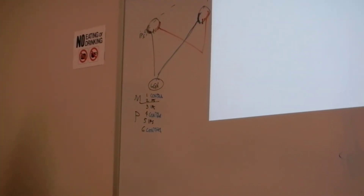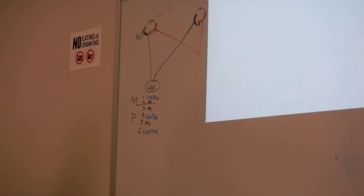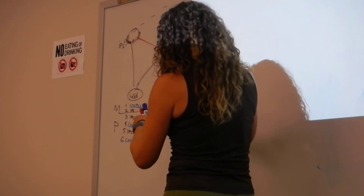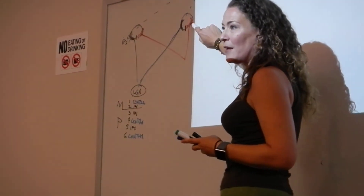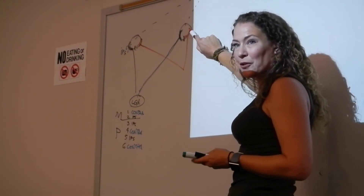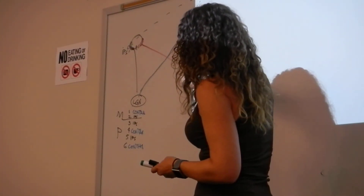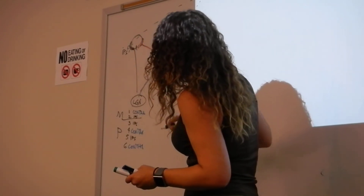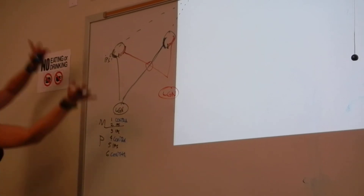Is this the exact same thing happening on the other side? The exact same thing, but opposite. So over here, we've got information from the temporal hemiretina — that's going to stay ipsilateral, and the information from the nasal side is going to cross over via the optic chiasm. So in this lateral geniculate nucleus, we're going to be processing information from the left side of the world — the information from each eye about the left side of the world.